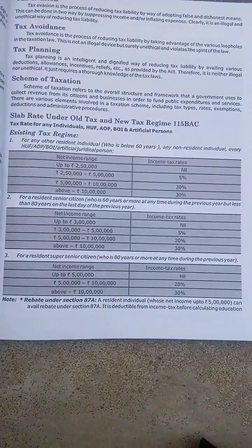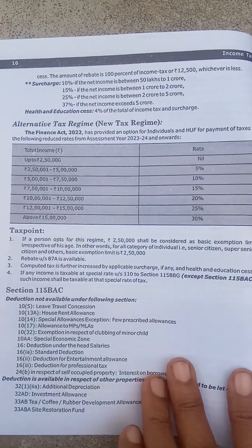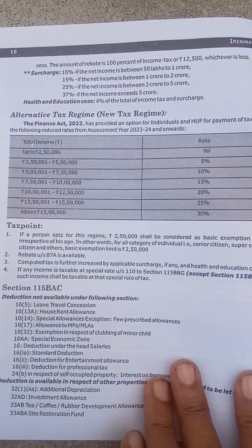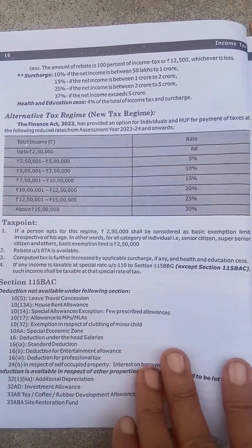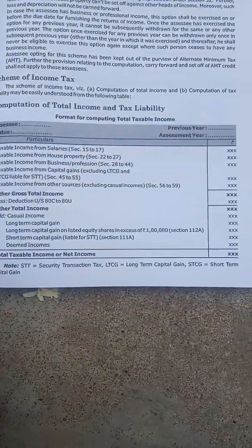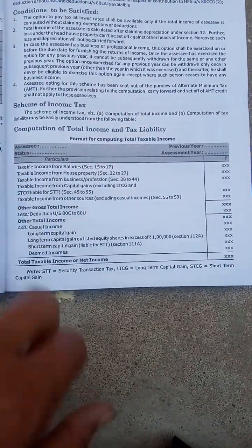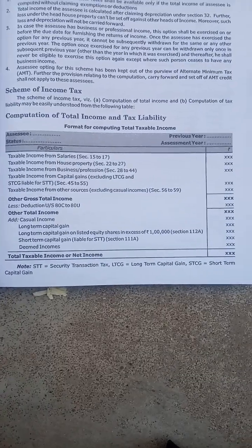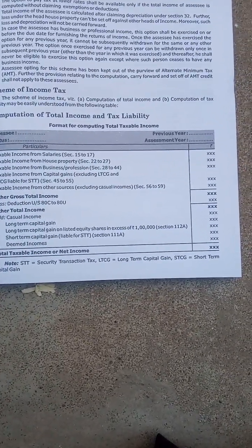We have slabs based on the alternative tax rate. The taxable income includes income from salaries and house property. You can see that there are deductions applicable to this taxable income.